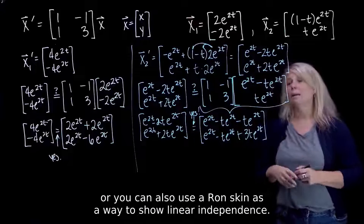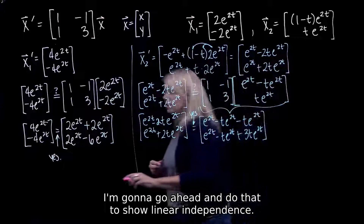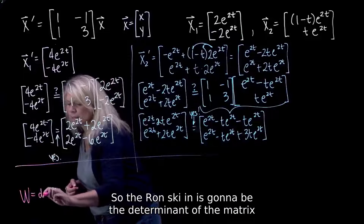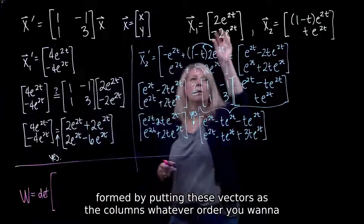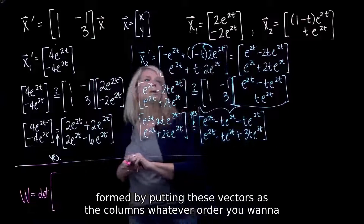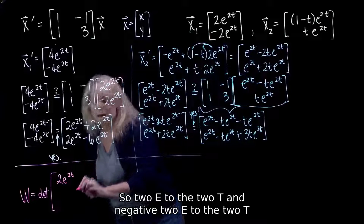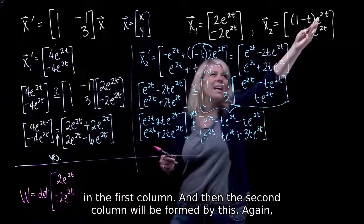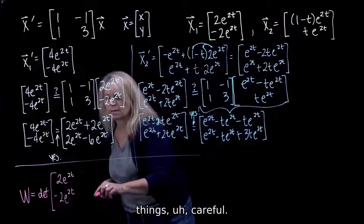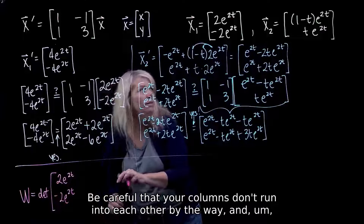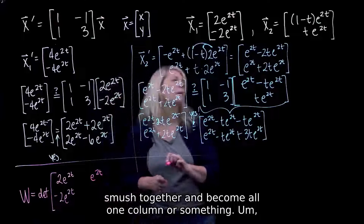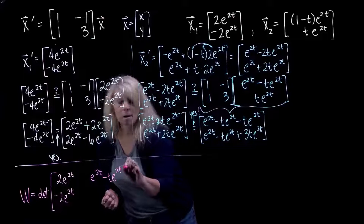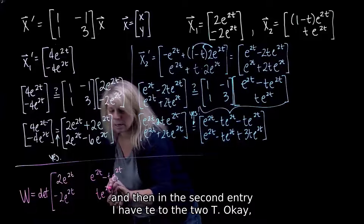You can also use a Wronskian to show linear independence. I'm going to go ahead and do that. The Wronskian is the determinant of the matrix formed by putting these vectors as the columns, in whatever order you want. So 2e to the 2t and negative 2e to the 2t in the first column. The second column is formed by the x2 components — distributing through the e to the 2t. Be careful that your columns don't run into each other. The second entry of x2 is t e to the 2t.